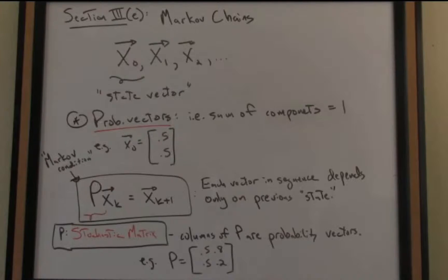To determine the next state of our system, the next vector in our sequence, we multiply that current vector on the left by a matrix P, and that matrix is what's called a stochastic matrix.